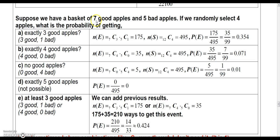Let's look at another example. Let's say we have a basket of seven good apples and five bad apples. And we randomly select four apples. What's the probability of getting exactly three good apples? Now, that would mean we got three good apples and one bad apple. So, first of all, let's calculate the number of ways to get three good apples and one bad.